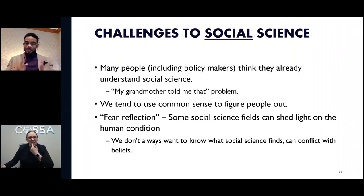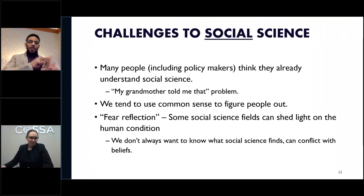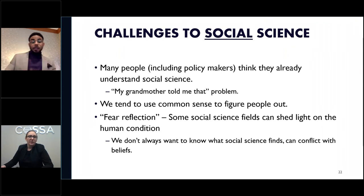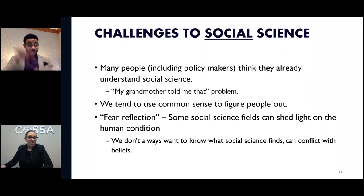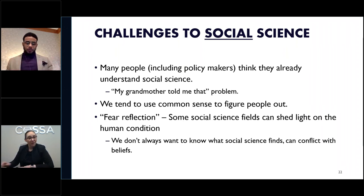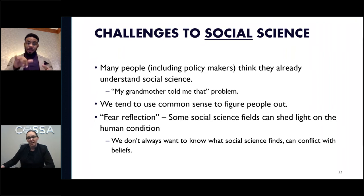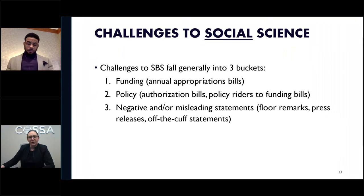Social science can trigger what we call 'fear of reflection' — shedding light on the human condition can be uncomfortable, especially in psychology or sociology. Political science is often criticized on the Hill because members of Congress feel they already understand politics. The good news is that social science is not under a direct attack by those who matter. It's really just a handful of members in the House and Senate who are critics. Most policymakers don't really care about social science one way or the other — it's simply not an issue for them.